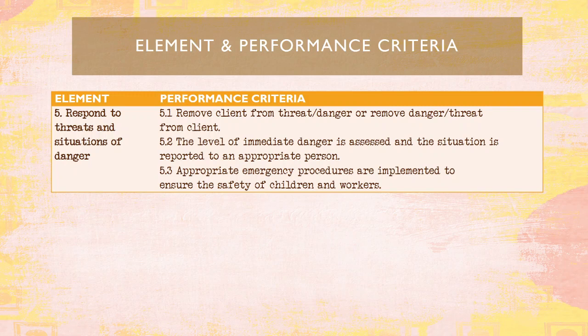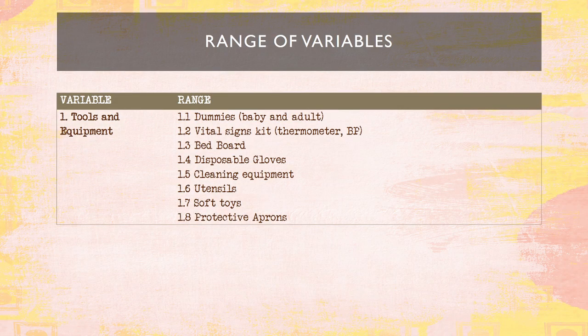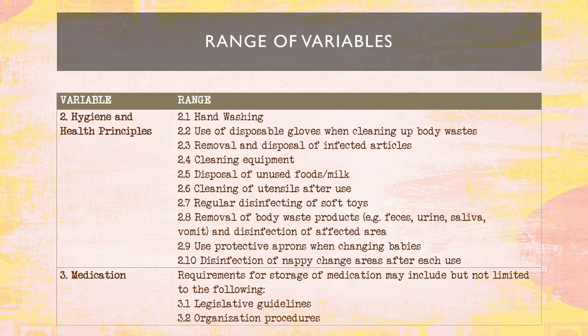Next, we have to respond to threats and situations of danger. Remove the client from the threat or danger, or remove the danger from the client. The level of immediate danger is assessed and the situation is reported to an appropriate person. Appropriate emergency procedures are implemented to ensure the safety of children and workers. The range of variables includes tools and equipment, as well as hygiene and health principles such as handwashing.